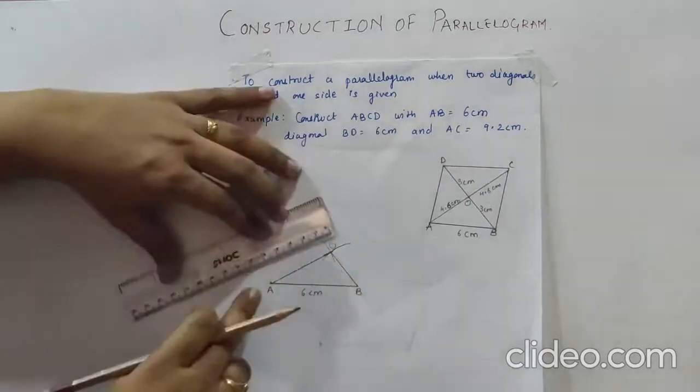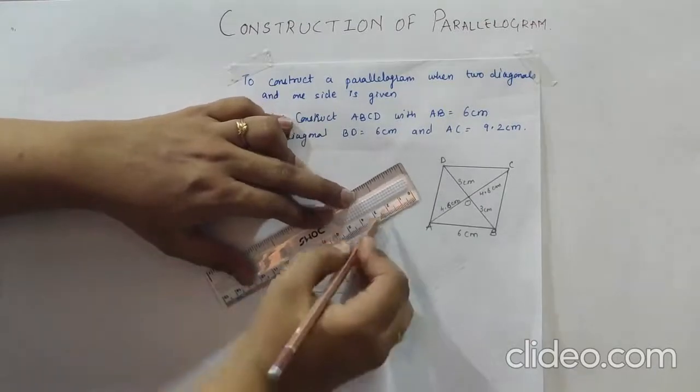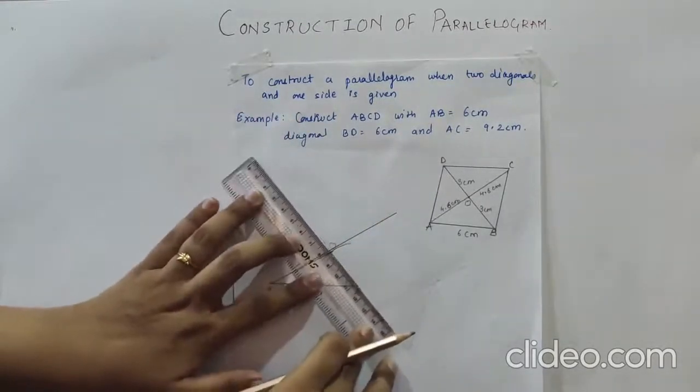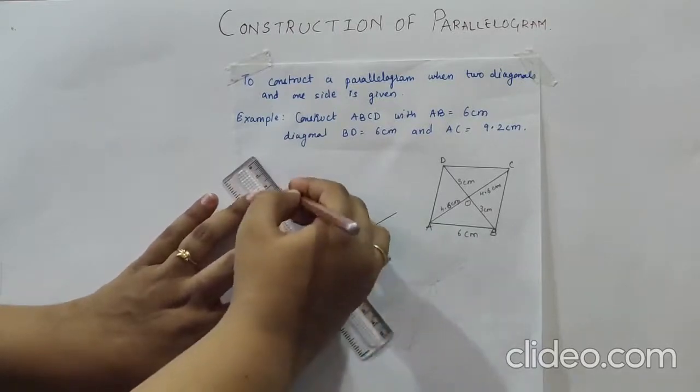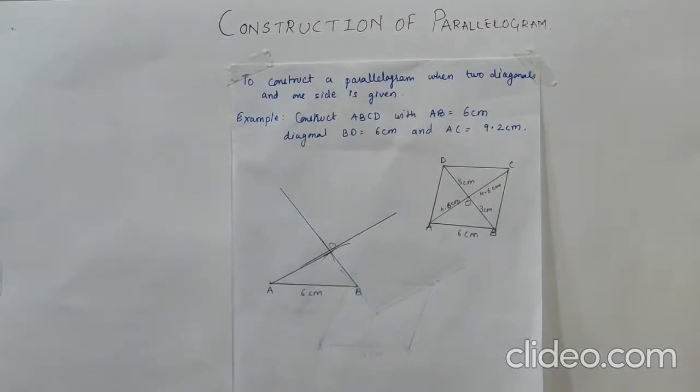In the next step what do we have to do? We have to extend this ray AO. And over here we have to extend this ray OB. You can see here we have this 3 and this 4.6.